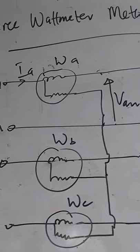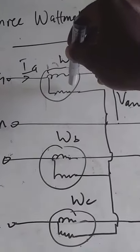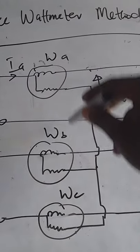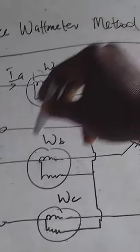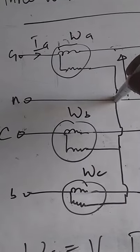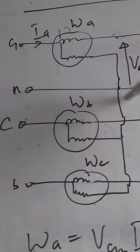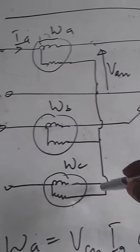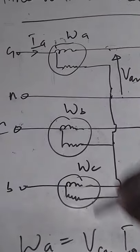In this instance you have the watt meters connected on each of the line, the current coil on each of the line, while the voltage coils are connected to the neutral wire. Because we have a neutral wire in this instance, you connect all the voltage legs to the neutral wire.